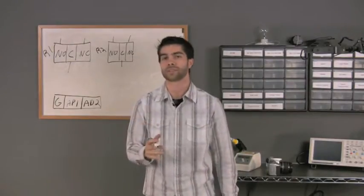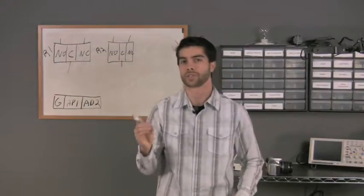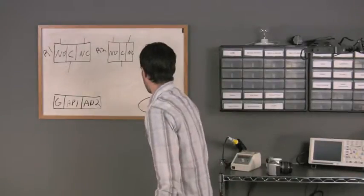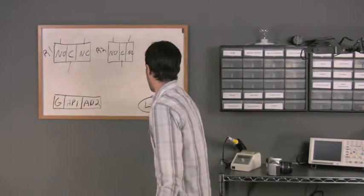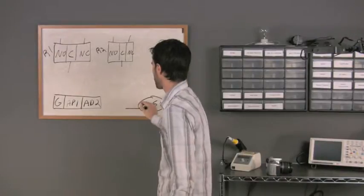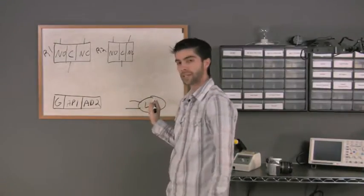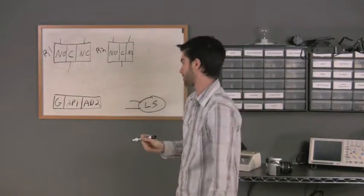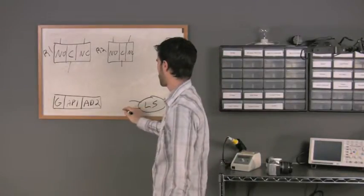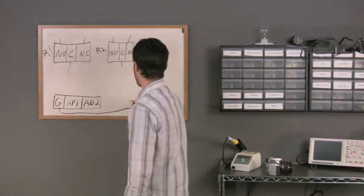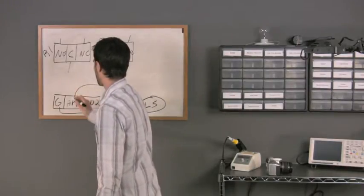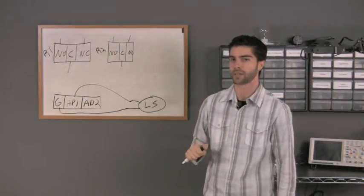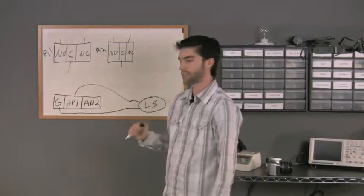I'm going to be using a light sensor. The way this light sensor works is whenever it gets dark out, it generates a contact closure. Here's my light sensor — I'll label it LS. It has two lines that come out. When it gets dark out, a contact closure is generated across these two wires, which means they just touch together. I'm going to attach one of those wires to my ground and the other one to my AD1 input. My reactor can now tell if it's light or dark outside just by wiring this up.